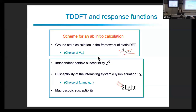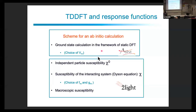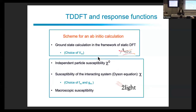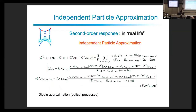For the ab initio calculation procedure: we start from the ground state calculated with ABINIT, choose the exchange-correlation functional, then evaluate the independent particle susceptibility based on Kohn-Sham orbitals, solve the Dyson equation with the chosen kernel (f_xc, g_xc = 0), and calculate the macroscopic susceptibility. This is done in the code DP (or equivalent) which you will use this afternoon.